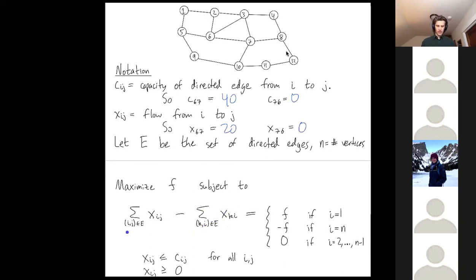1 is going to be our source vertex. So at 1, there's no vertices coming into 1, so this is going to be summing over the empty set. The sum of flow coming out of 1 is just going to be equal to the flow in our network, which we're trying to maximize. And vertex n, this is our sink vertex. Here, there's no edges going out of our sink, so this is 0. But the sum of all the flow coming in, once you take it negative, that should be equal to negative the flow of our network.